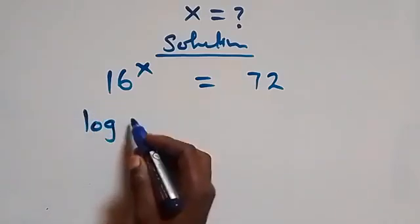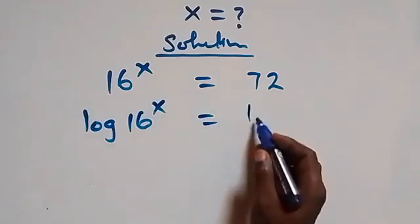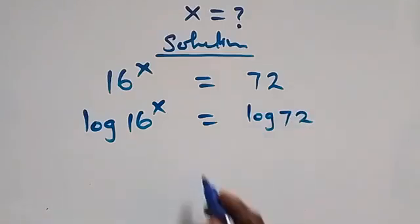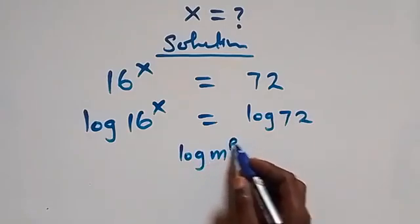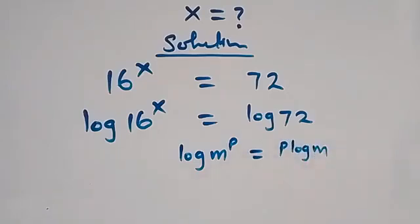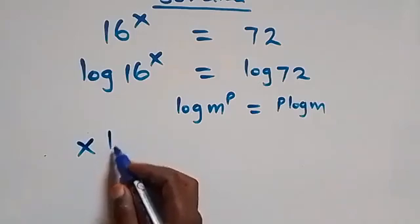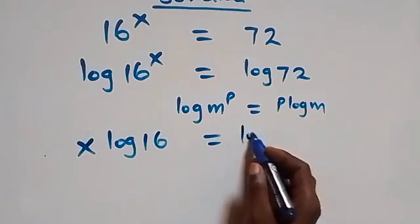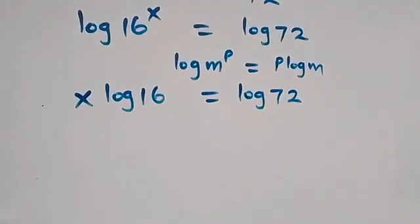We have log 16 raised to power x equals log 72. Then from the power rule of logarithms, when we have log m raised to power p, this is the same thing as p·log m. So this becomes x·log 16 equals log 72.